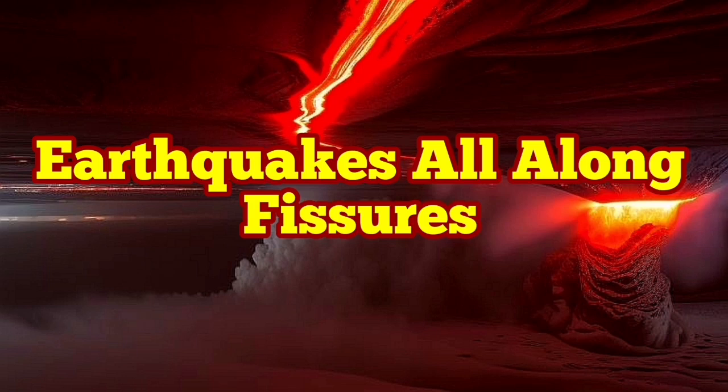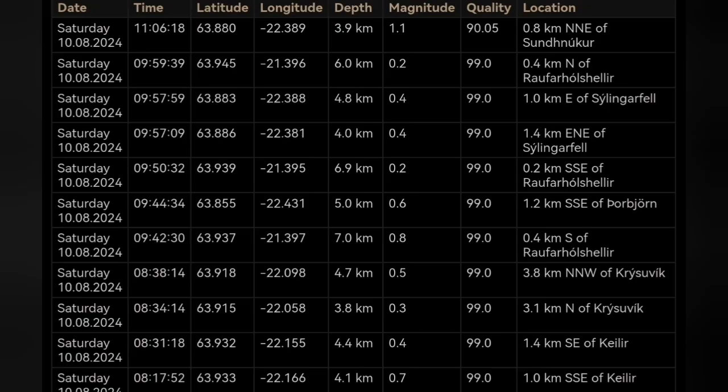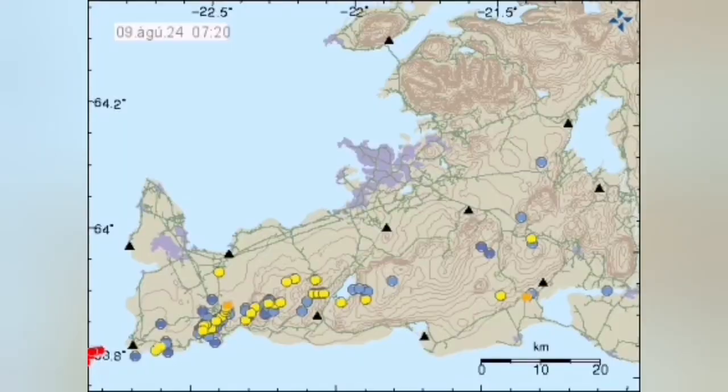We are seeing a line of earthquakes along the fissure, or we should say the dike that is at depth. These are the earthquakes in the Svartseng volcanic system of the Reykjanes Peninsula of Iceland.